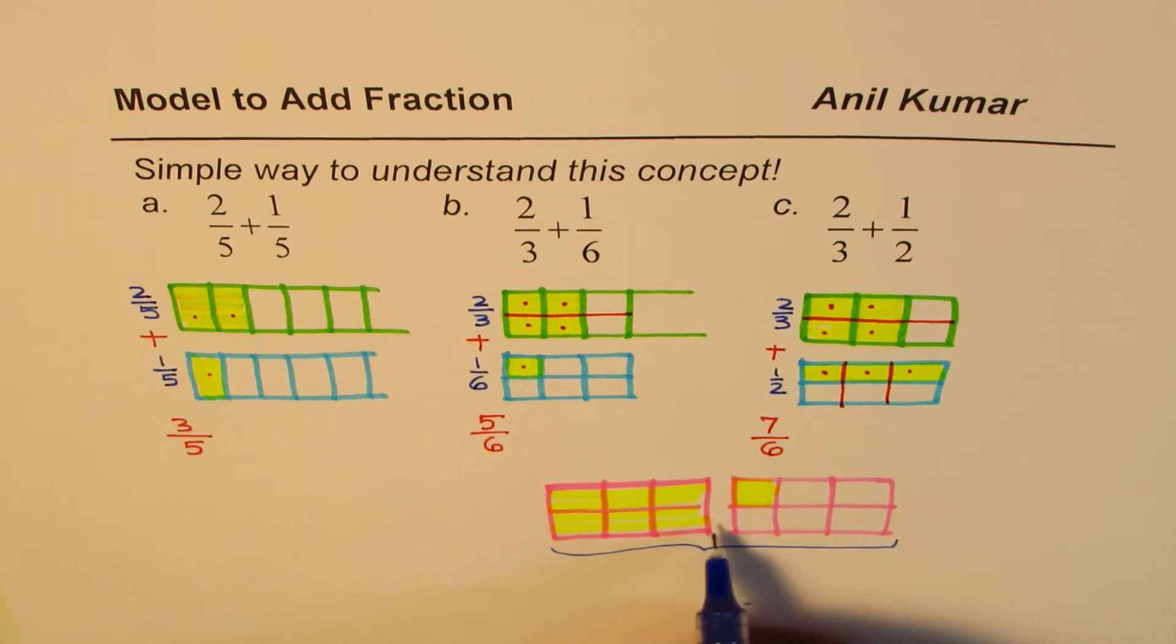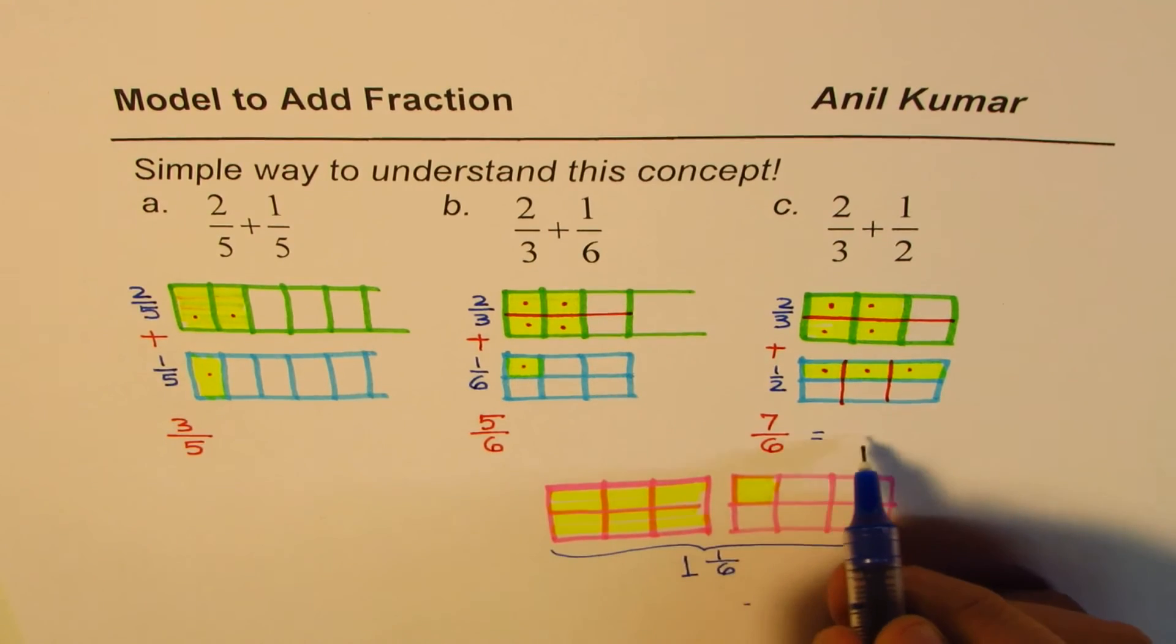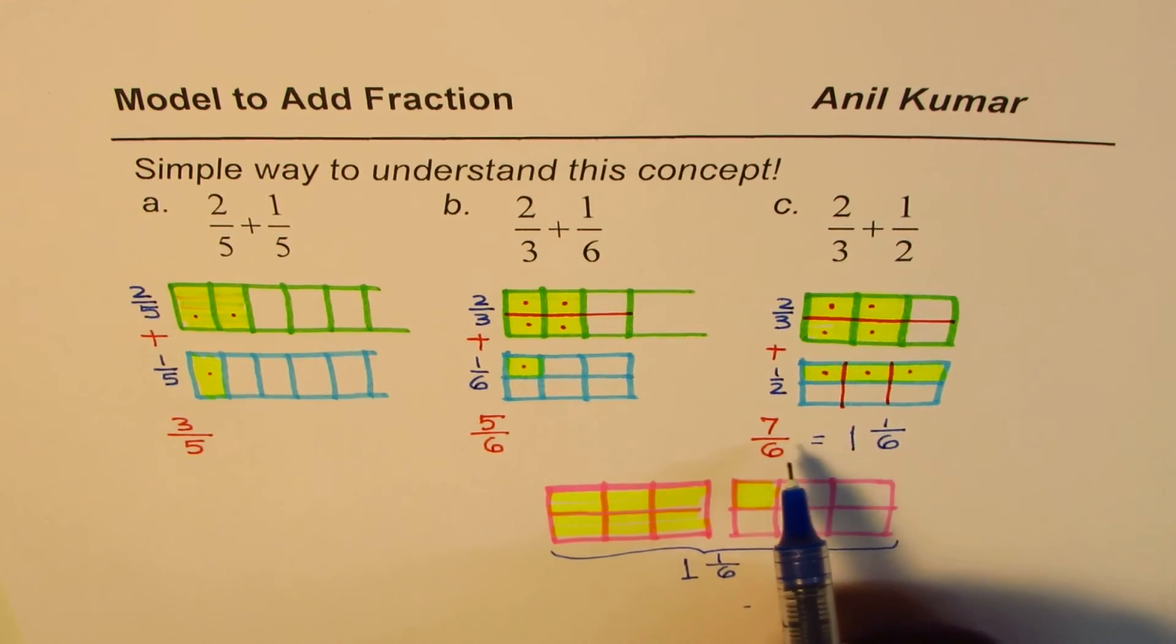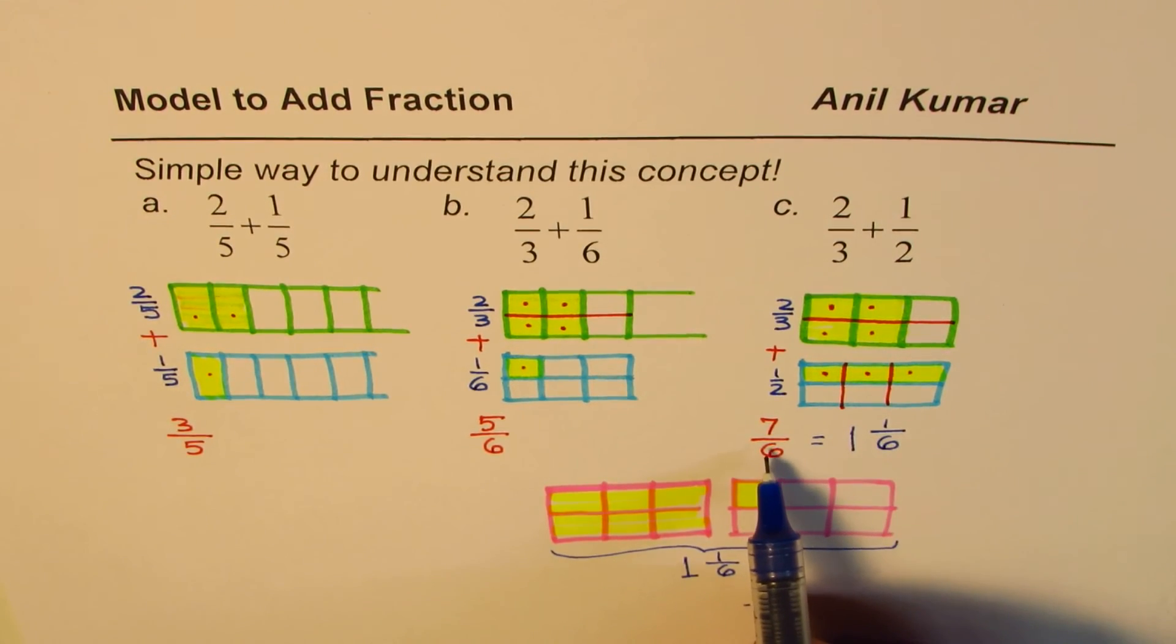But you could write this as one whole and one out of 6. Do you see that? So 7 out of 6 could be written as one whole, one sixth. So that is how you can write improper fraction as a mixed number.